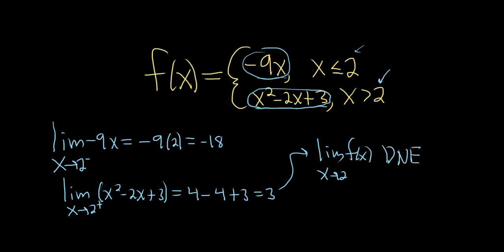That means two things. One, it means it's not continuous at 2. So x equals 2 is a discontinuity. Remember, the limit has to exist for the function to be continuous.